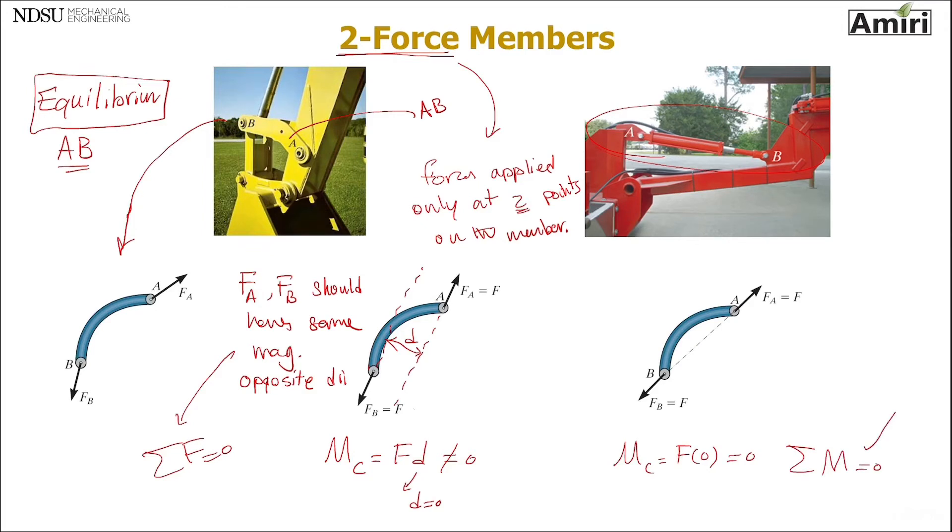And now this is in equilibrium. So a two-force member forces need to be equal, opposite direction, equal magnitude, opposite direction, and share the same line of action. So those three need to be observed and satisfied for two-force members.